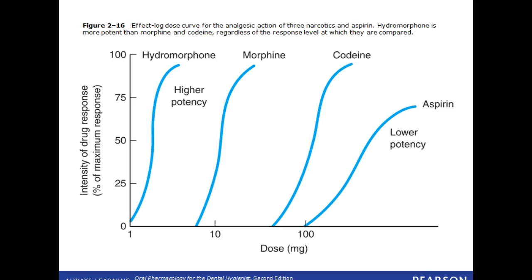Figure 2-16 shows effect-log-dose curves for the analgesic action of three narcotics and aspirin. Hydromorphone is more potent than morphine and codeine regardless of the response level at which they are compared. Aspirin has a lower potency.